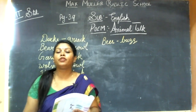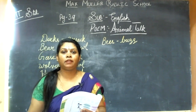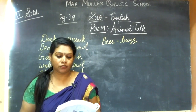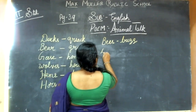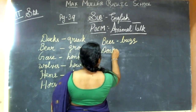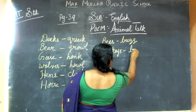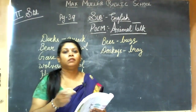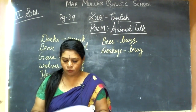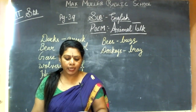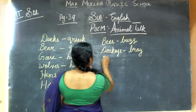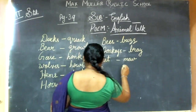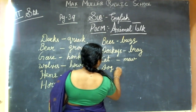And donkeys bray. The sound of the donkey is bray. So donkeys bray. Cats meow — what is the sound of the cat? Meow. Dogs bark — the dog will bark.